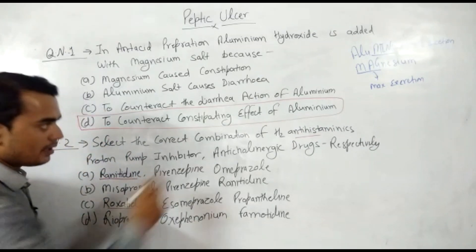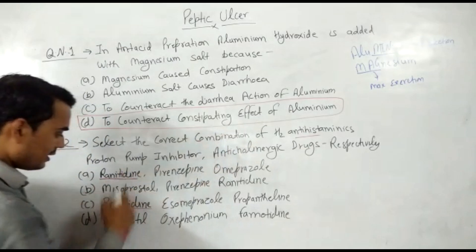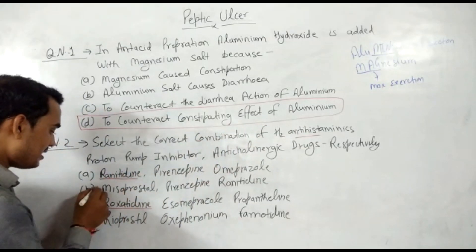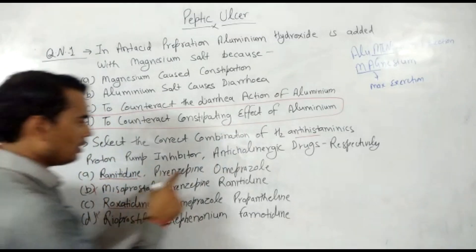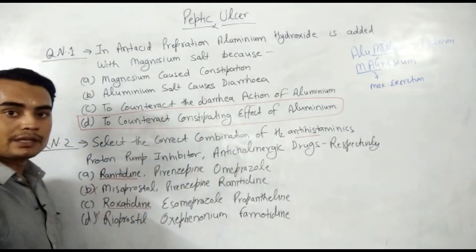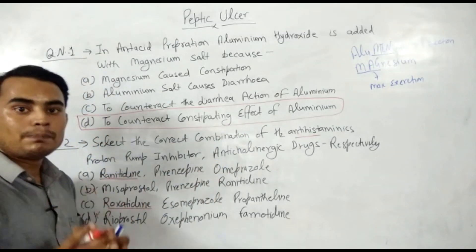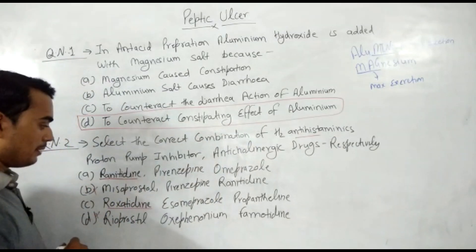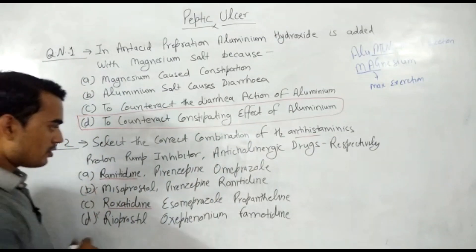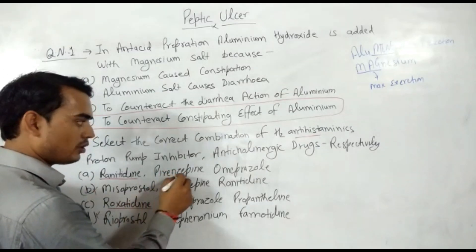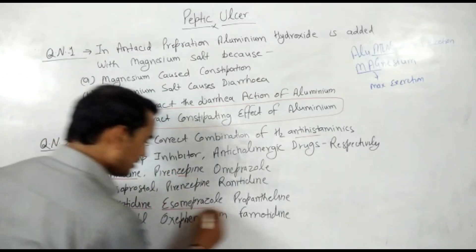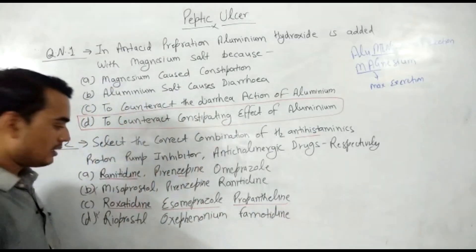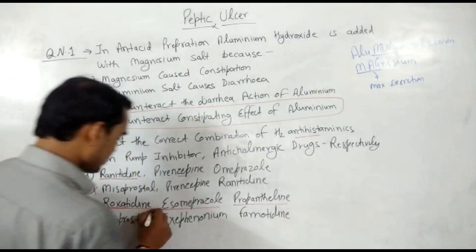Options containing ranitidine and roxatidine may be candidates. Proton pump inhibitors include omeprazole and esomeprazole. Pirenzipine is an anticholinergic — not a PPI. Propantheline is also an anticholinergic drug. So the correct answer is the option listing ranitidine/roxatidine as H2 blockers, omeprazole as PPI, and pirenzipine/propantheline as anticholinergics.